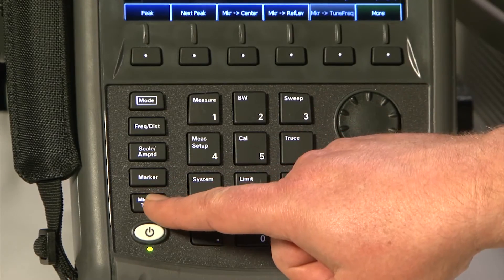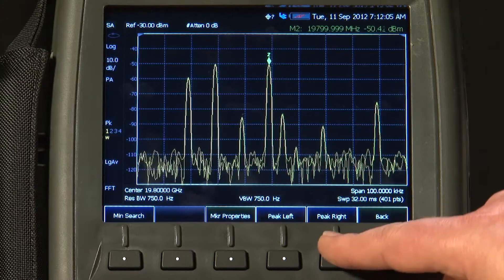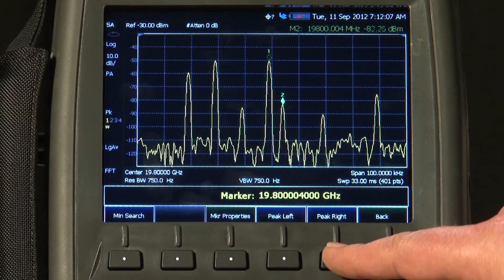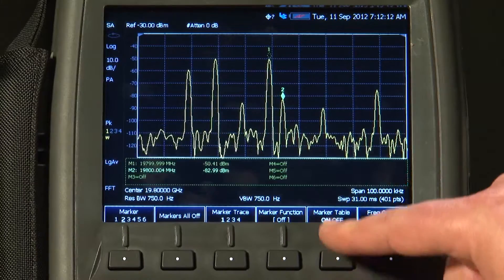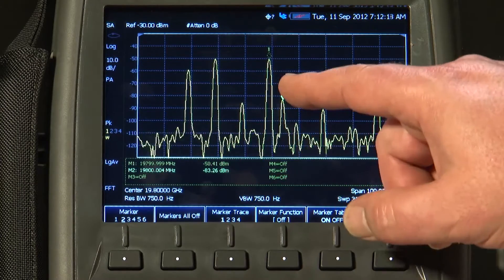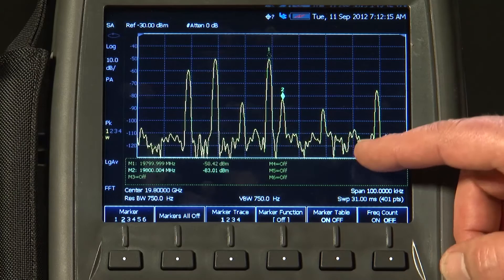Marker 2, more, peak, right. So we can turn on up to 6 markers. And we can even turn on a marker table to display the frequency and amplitude values of all 6 markers.